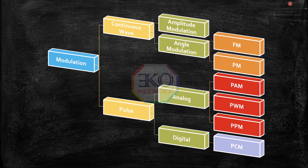Here is the classification of modulation. This classification is done based on the type of carrier used in the process of modulation. If a carrier wave which is continuous in nature is used, then it is called continuous wave modulation. In continuous wave modulation, there are two types: amplitude and angle modulation. And in angle modulation, there are again two types: frequency and phase modulation. So in total, under continuous modulation, we have amplitude modulation, frequency modulation, and phase modulation.